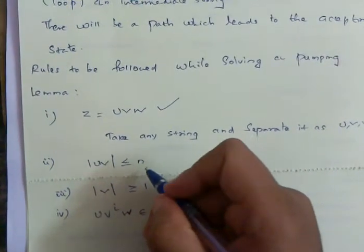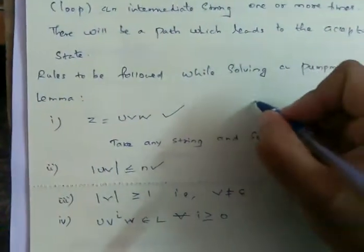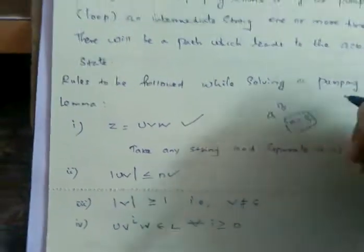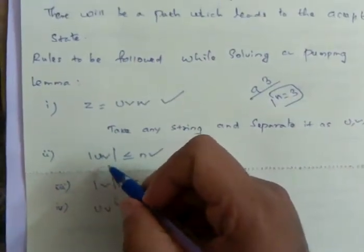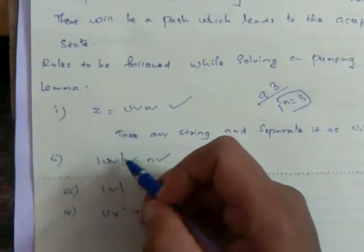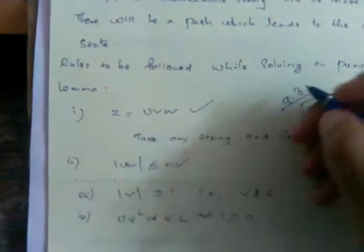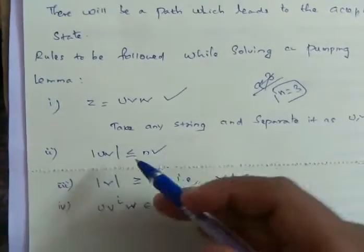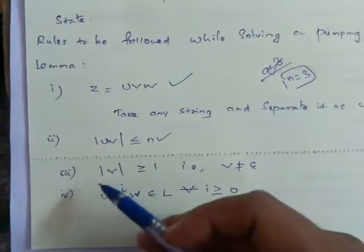The second rule is: the modulus of uv is less than or equal to n, where n is the length of the string. For example, if you take a^3, then n is equal to 3. So the cardinality — the length of the string uv — must be less than or equal to n, the total length of the string.